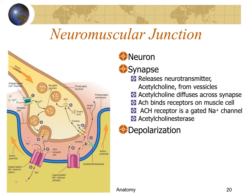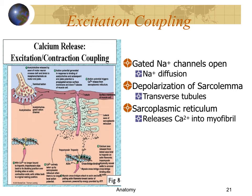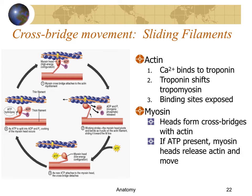To activate a skeletal muscle cell, action at the neuromuscular junction is required. This is where a neuron meets the muscle cell membrane and releases a neurotransmitter, which opens ion channels and causes depolarization. In excitation-contraction coupling, this depolarization spreads across the membrane and into transverse tubules, causing the sarcoplasmic reticulum to release calcium into the myofibril. Calcium exposes binding sites on actin so that myosin heads can form cross bridges that pull actin past myosin — requiring calcium and ATP.